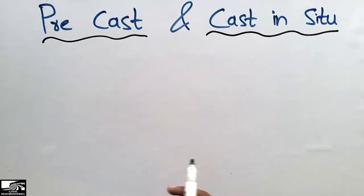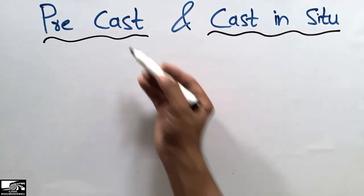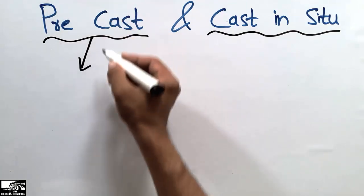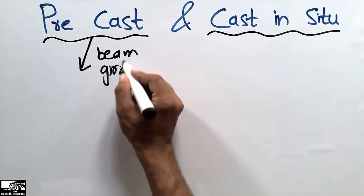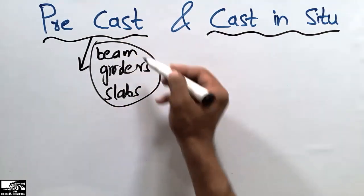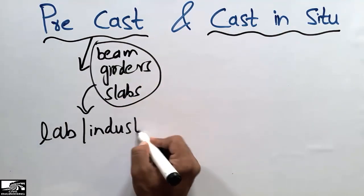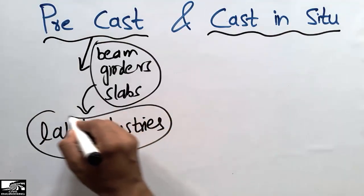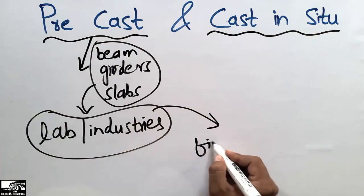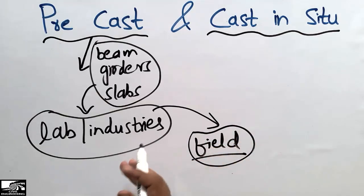We commonly refer to precast concrete beams, precast slabs, or precast girders. What this means is that these structural members are prepared in a laboratory or factory. They are manufactured in the labs or industries, and there is no need to prepare them in the field.